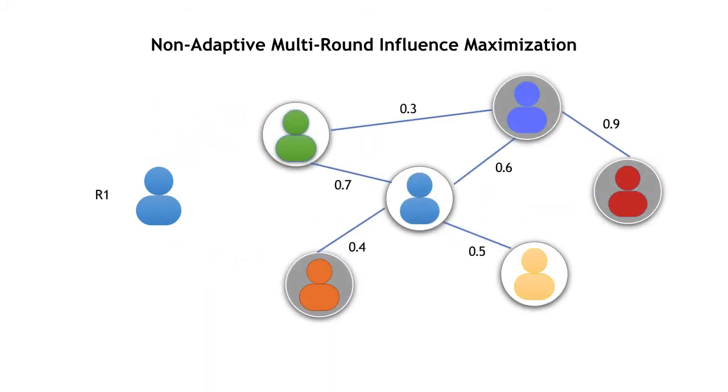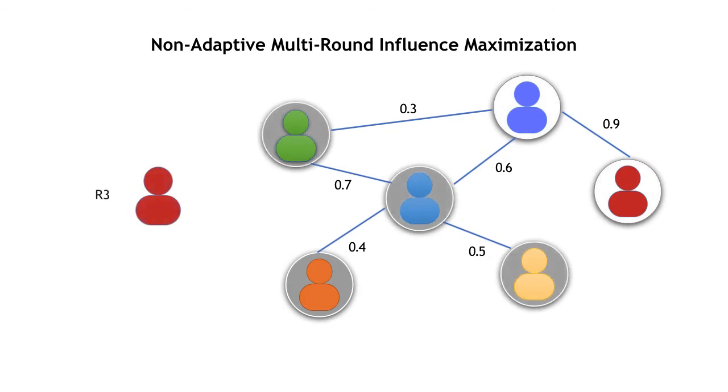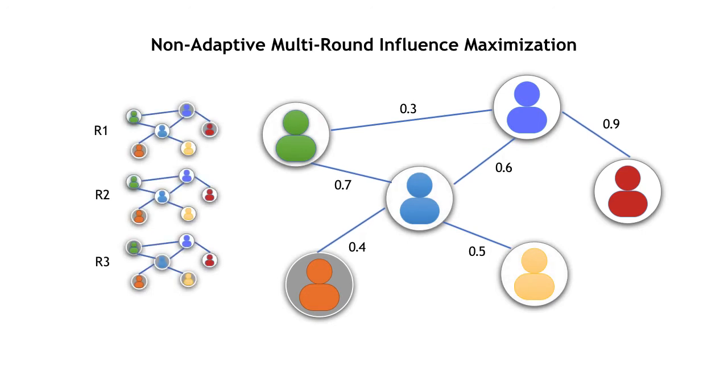After node selection, we will see the influence spread result of each round. Here's an example. Finally, we combine the results over all rounds and count the active nodes as the final result.